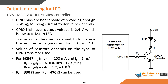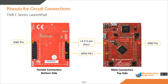Instead of the calculated resistance value, we use 330 ohms to also limit the current through the LED. We use 470 ohms for the base resistor as it is readily available. The Tiva C-Series Launchpad has both types of connections: 20-pin male connectors on the top side and the same connections in female format on the opposite side. We can use either connector for interfacing external peripherals.